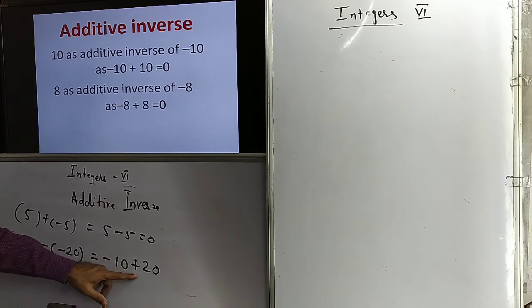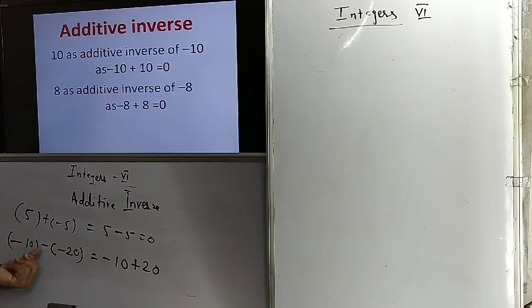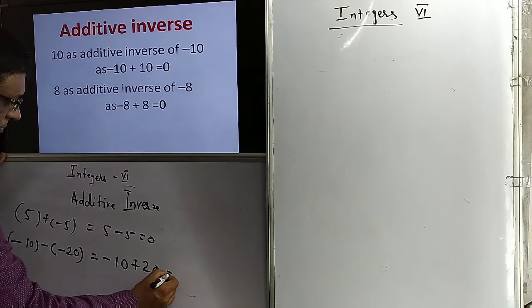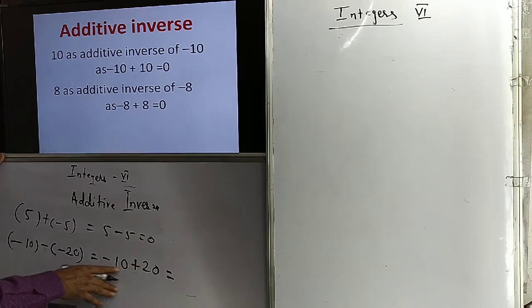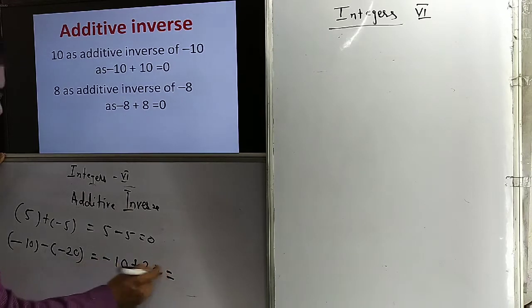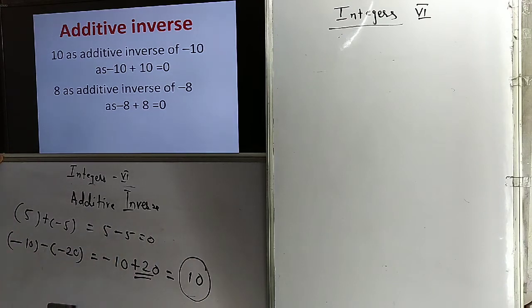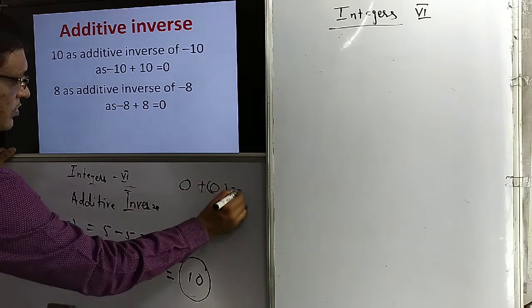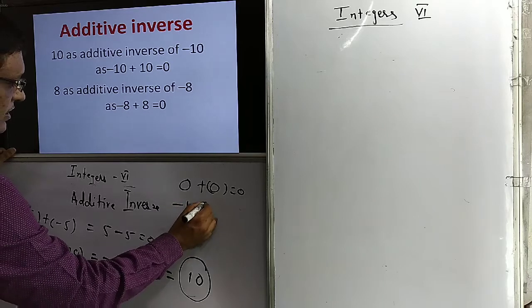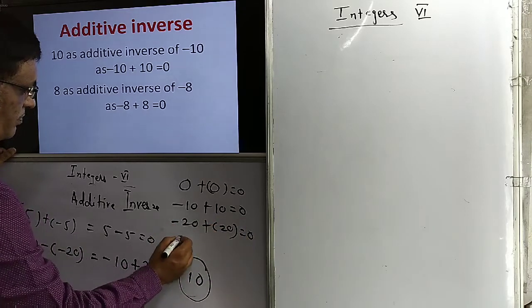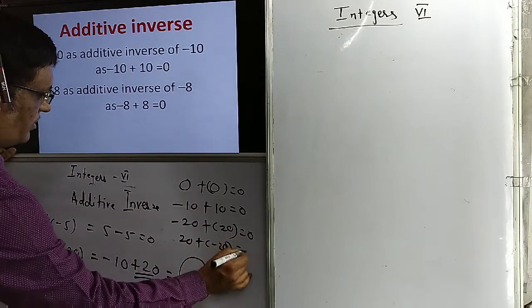When we do subtraction, we add the additive inverse. Minus sign outside the bracket means we change the sign of the term inside the bracket, so minus 20 becomes plus 20. Now minus 10 and plus 20 have different signs, so we subtract: 20 minus 10 equals 10. The number with larger magnitude gives the sign, so the answer is plus 10. Note: additive inverse of 0 is 0; of minus 10 is plus 10; of minus 20 is plus 20; of plus 20 is minus 20, because their sum equals 0.